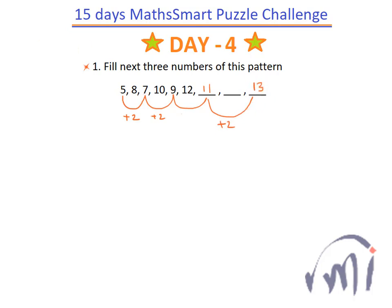And if I look at the numbers at even places, 8 plus 2 is 10, 10 plus 2 is 12, and 12 plus 2 — 14 will come over here. So 11, 14, and 13 will be the next three numbers in this pattern.